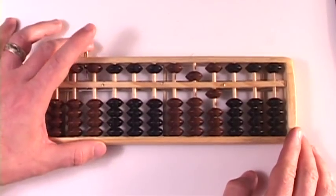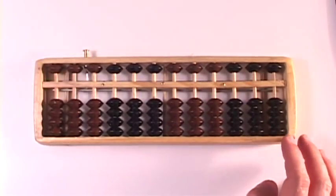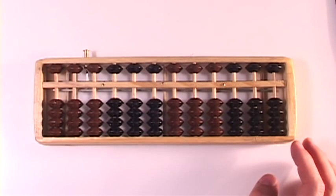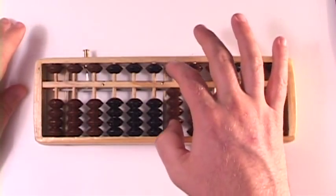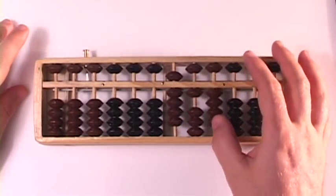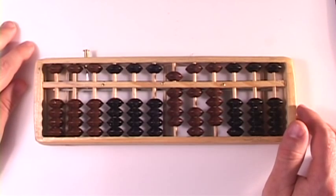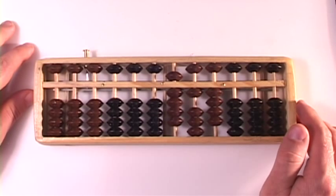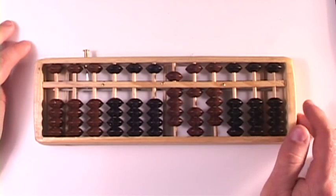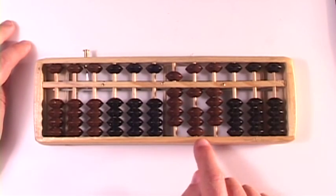Let's do one more. Let's do a big number. Let's do 914. A 9, a 1, and a 4. That's a lot of beads on there. 914 minus 508. So, 914 minus 508.